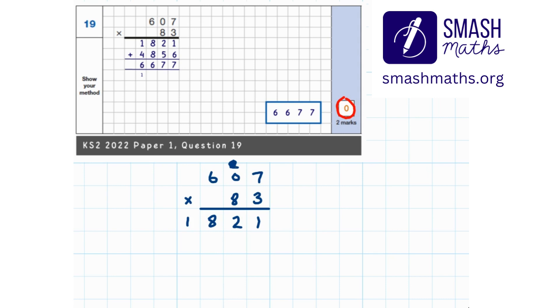If we multiply a number by 10, we need to make sure all the digits move one place value column to the left, and we can do that by adding a placeholder zero. Now we can just multiply by 8. So 7 multiplied by 8 is 56, which is the 6, and we can exchange the 5.